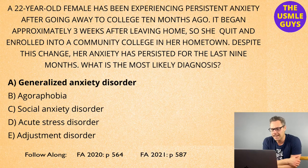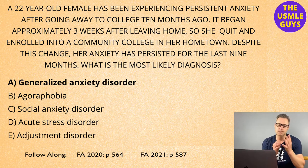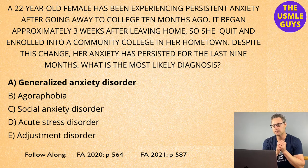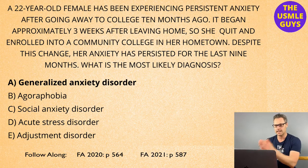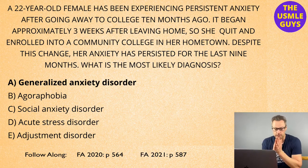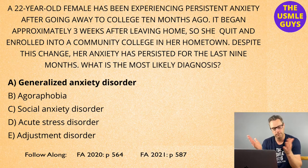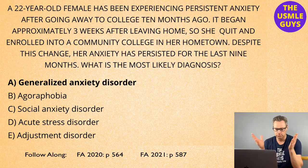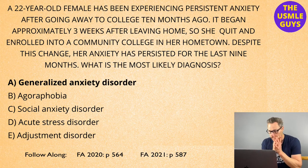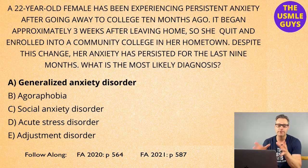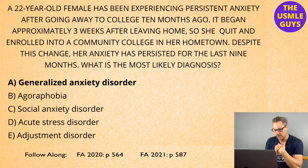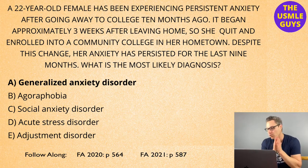The correct answer here is A — generalized anxiety disorder, GAD. This is an example of the importance of knowing timeframes when diagnosing behavioral disorders on your USMLE exams. This sounds just like adjustment disorder, but if symptoms do not dissipate by six months after the stressor ends, we move into GAD territory, and GAD becomes the correct diagnosis.